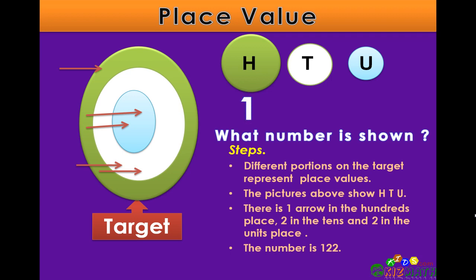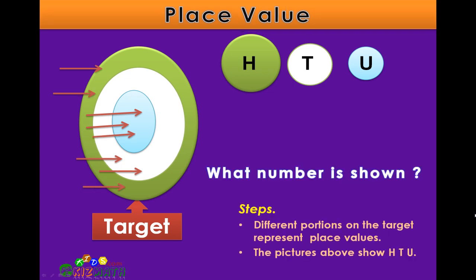One in the hundreds or the green section, two in the tens or the white section, and two in the units or blue section, giving us the number 122. Let's try another number. Here the arrows have already been put onto the target.